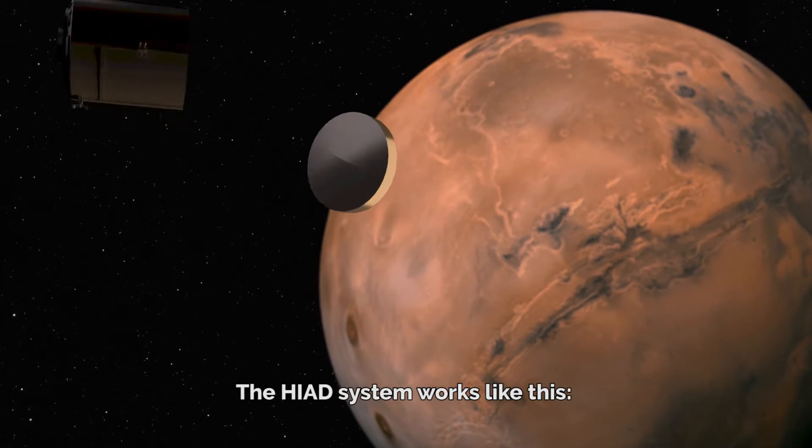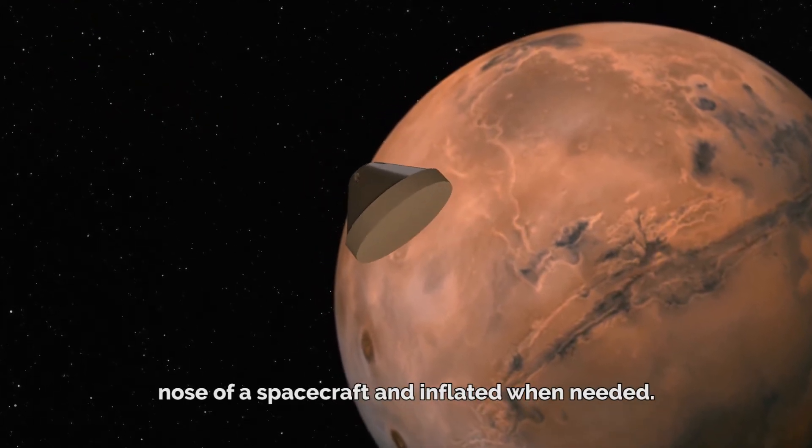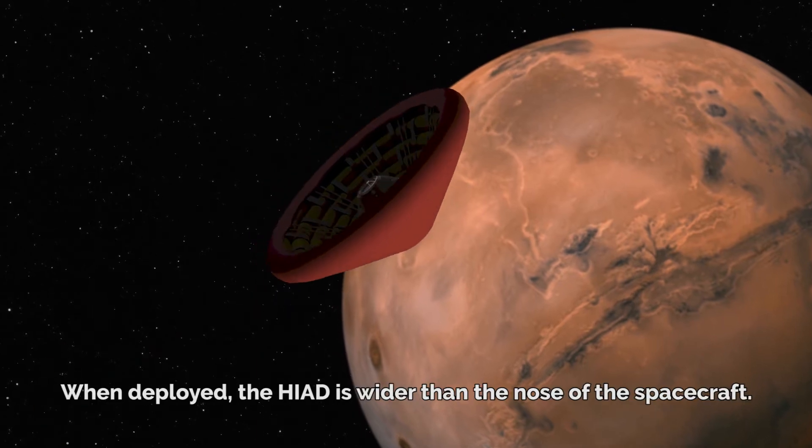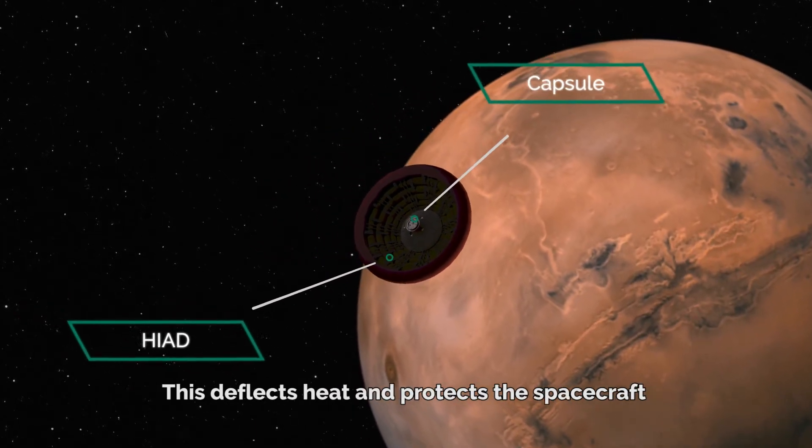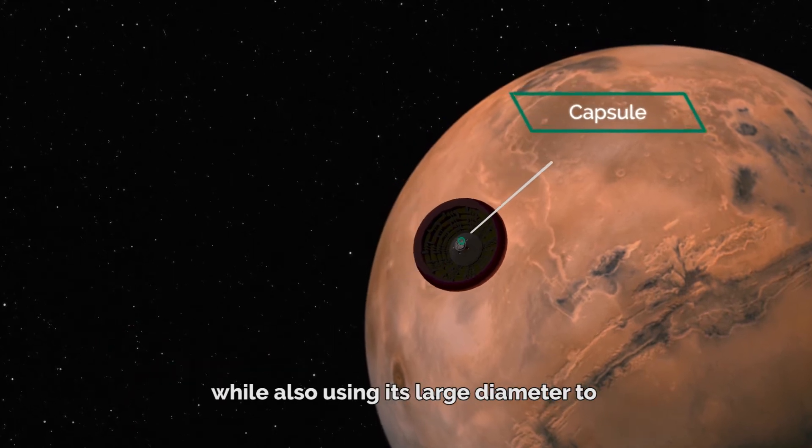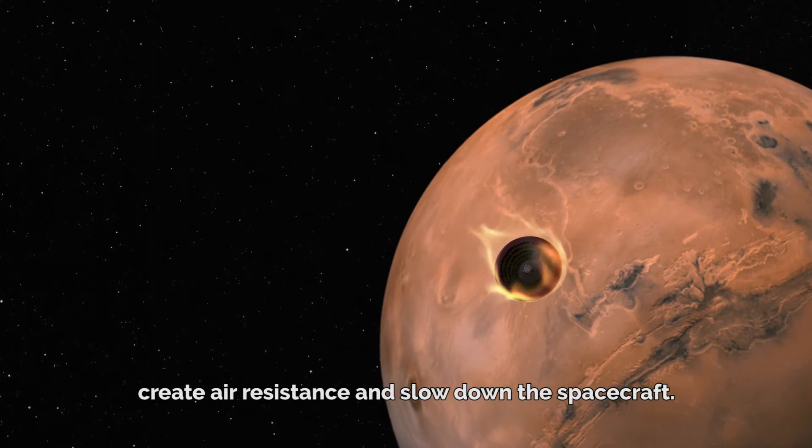The HIAD system works like this. The flexible silicon carbide fabric is stored in the nose of a spacecraft and inflated when needed. When deployed, the HIAD is wider than the nose of the spacecraft. This deflects heat and protects the spacecraft while also using its large diameter to create air resistance and slow down the spacecraft.